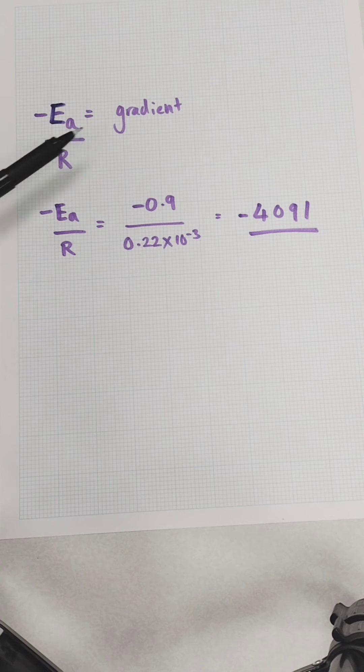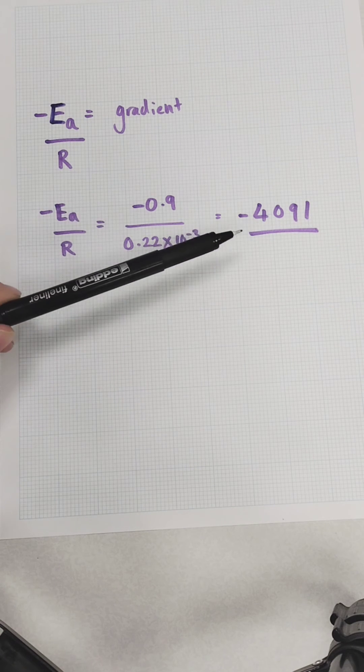That gradient represents minus Ea, minus the activation energy divided by R, the gas constant.